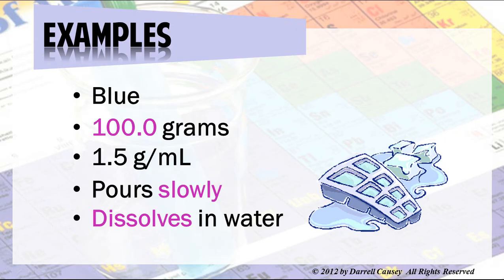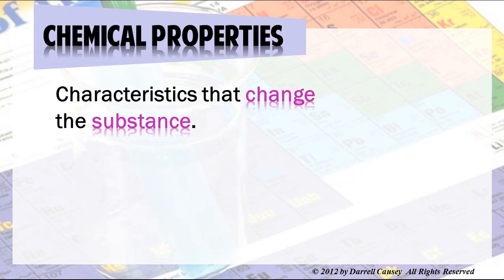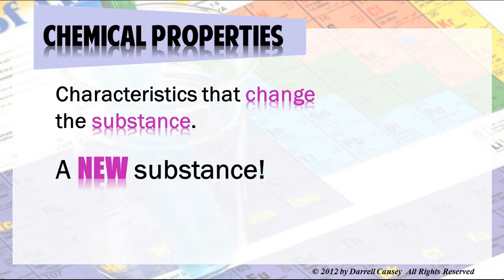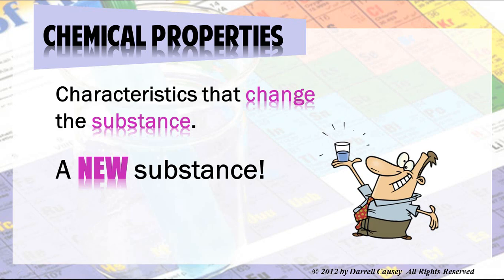Chemical properties are characteristics that change the substance — you get a new substance. Such as when you burn a piece of paper: as you burn that piece of paper it goes through a chemical change, and what you have left over is ashes or carbon, and what escaped was carbon dioxide and water. You have new substances. That's chemical properties, chemical changes.